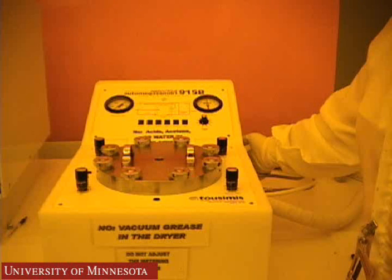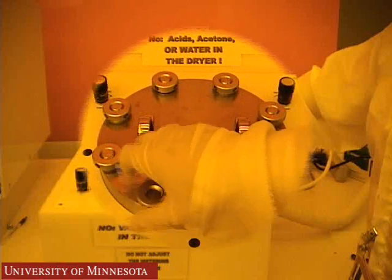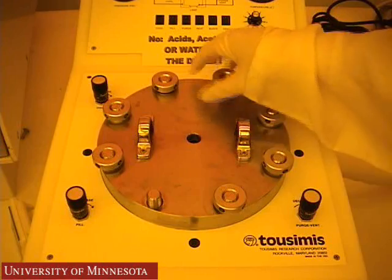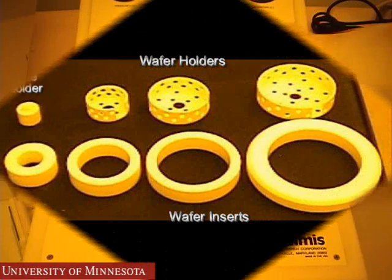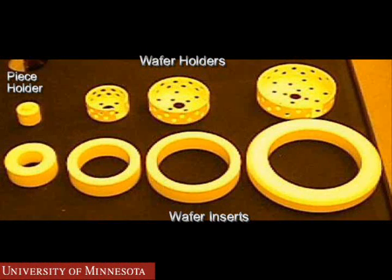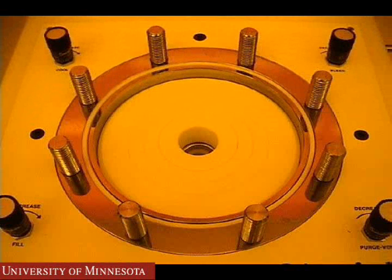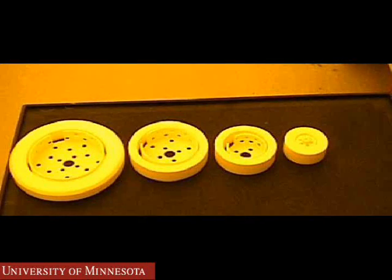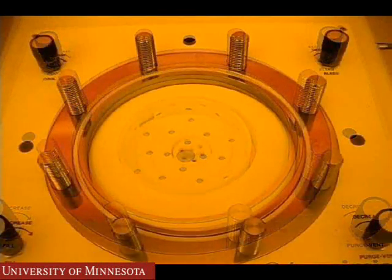To turn on the machine, go to the right side and flip the power switch to on. Push the vent button — it should start blinking. Loosen the nuts on the lid in a star pattern: loosen one nut, then the opposite nut. Carefully lift the lid off the chamber and place it to the right of the machine. The chamber can fit anywhere from a six-inch wafer to a one-centimeter square piece using the correct insert. The inserts reduce the size of the chamber volume to minimize the amount of solvent needed for the run. The holder holds the wafer or piece in place. Each holder can hold multiple wafers using the spacers provided with the system. The piece holder also can accommodate several pieces at a time.